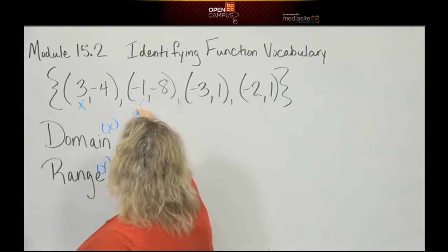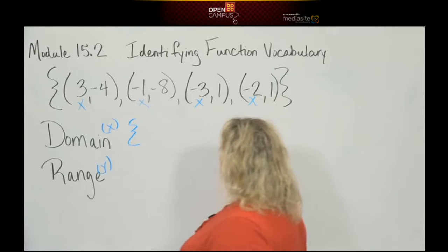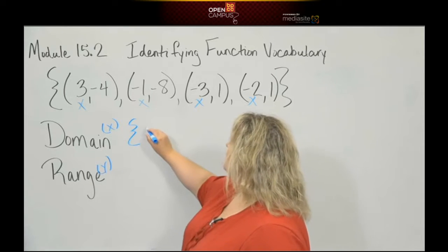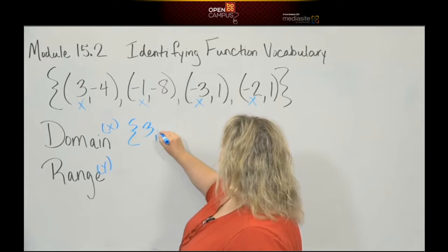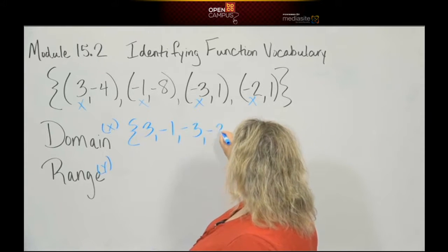Here's x, here's x, x, x. Let's write them down. So we have our little brace, our little squiggle. We have three, we have negative one, I have negative three, I have negative two.